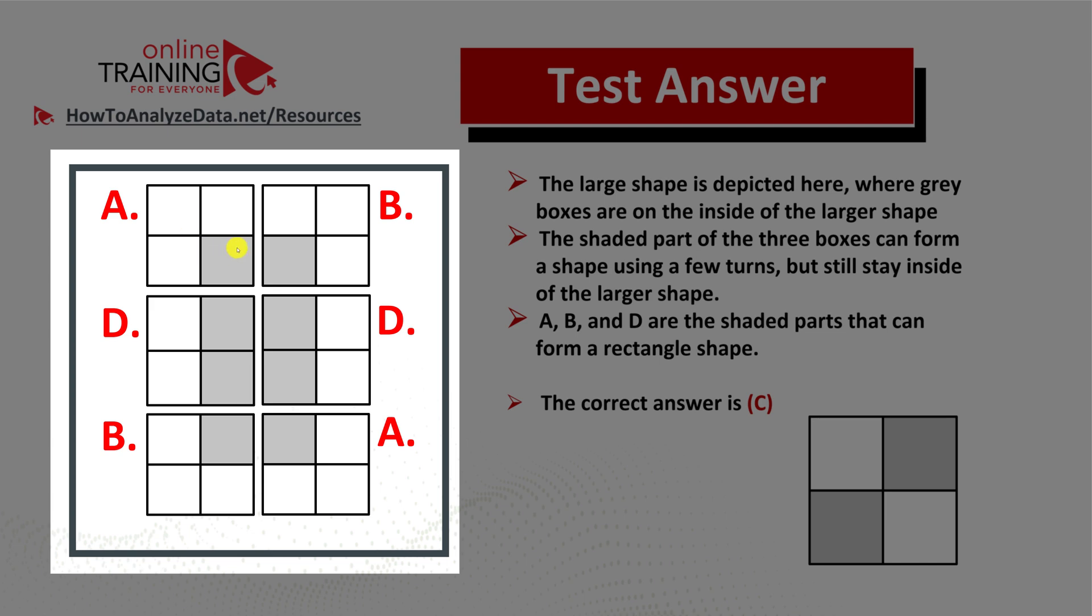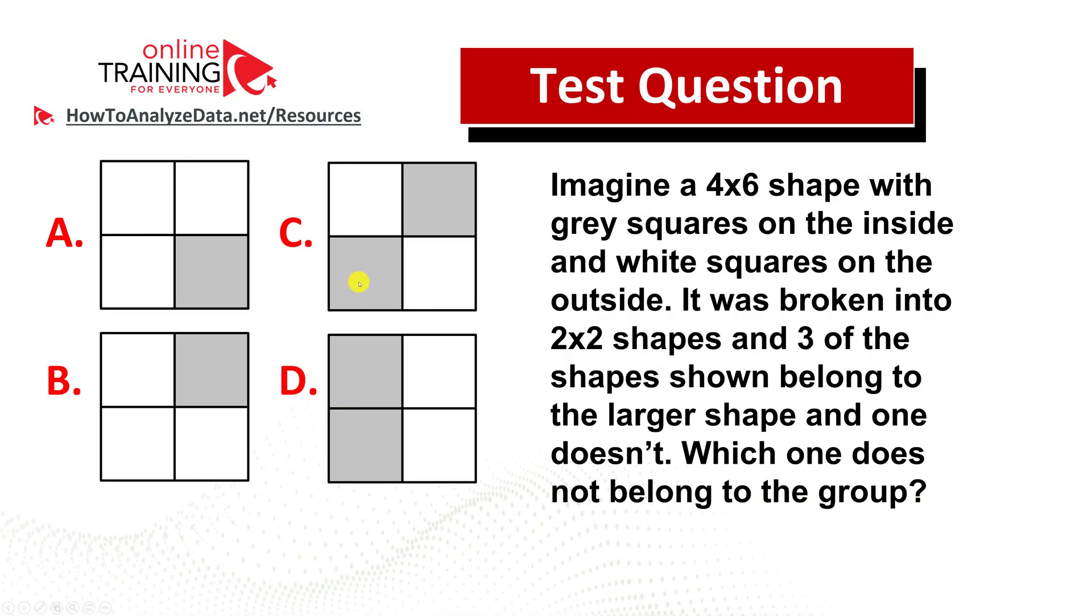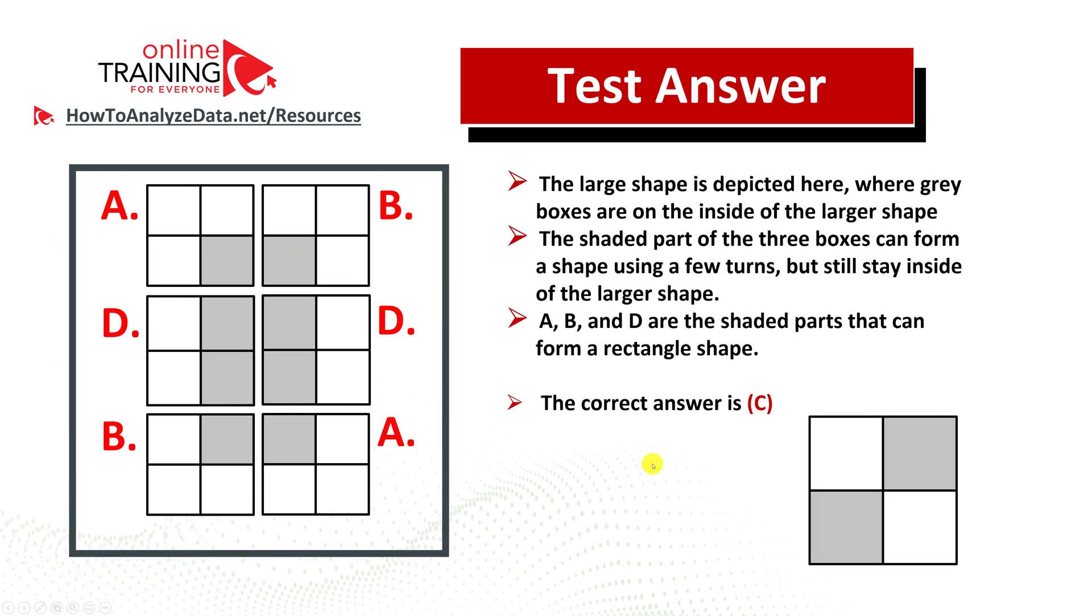If we go back to the question, you see that choice A is represented right here. If you flip the box in the bottom right corner of the screen, choices B are in the opposite corners, and choices D are in the middle. But choice C is not represented here anywhere. So the correct answer is choice C.